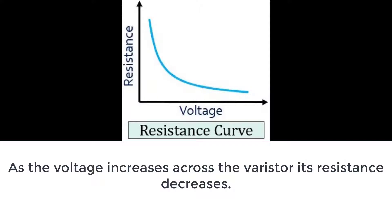Now, as we increase the voltage across the MOV and reach another reference point B, at this point B, the applied voltage is maximum and the resistance is minimum.